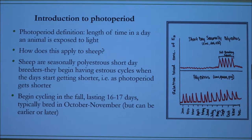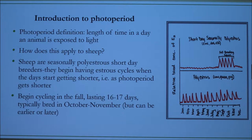The way that this applies to sheep: sheep are seasonally polyestrous short-day breeders, which basically means that they start having their estrous cycles as the days are getting shorter — as the photoperiod gets shorter. So they begin cycling in the fall, and their cycles last about 16 to 17 days. They cycle roughly September to December, give or take a little bit based on the animal and where they're located on the earth. Usually they're bred in October or November, but again it can be earlier or later.